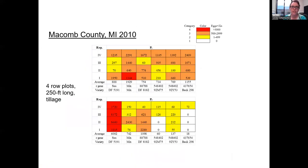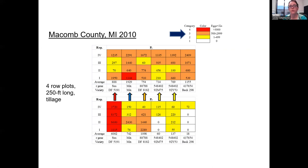Here's another way to visualize one of those trials. I have different categories depending on the population density of soybean cyst nematode. The red is a lot of soybean cyst nematode — greater than 3,000 per 100 cubic centimeters of soil. The orange is 500 to just under 3,000. The yellow is one to 499 and the white is zero or not detected. I have the initial population densities in this chart on the top, and then the resistance gene listed here — susceptible, a mixture, an 88788, two of the 548402 or Peking sources, and one of the 437654.